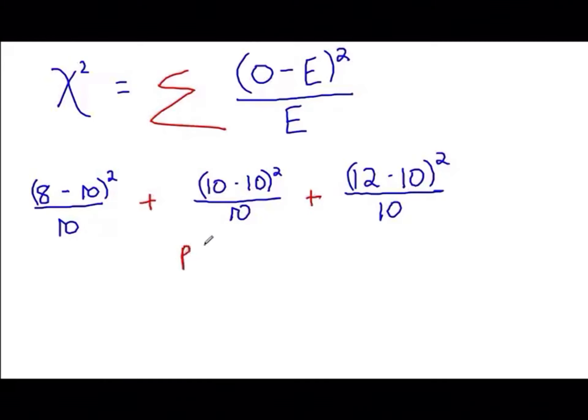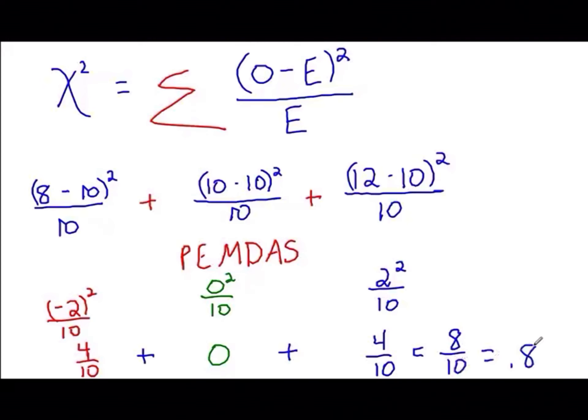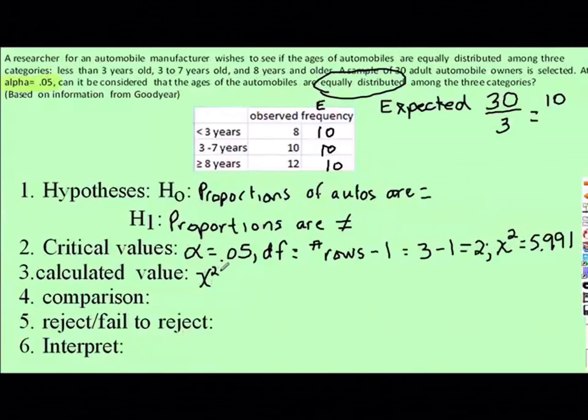Using order of operations, remember from high school, please excuse my dear Aunt Sally: parentheses, exponents, multiply, divide, add, subtract. In my parentheses, 8 minus 10 would be negative 2. That has to be squared and divided by 10. So I have 4 divided by 10. Second value, 10 minus 10 would be 0. 0 squared is still 0. 0 divided by 10 would be 0. My last value, 12 minus 10 would be 2. 2 squared divided by 10. Again, I have 4 out of 10. Sigma says add all those together. And I would have 8 divided by 10, or 0.8. Calculated value of chi-square would be 0.8.